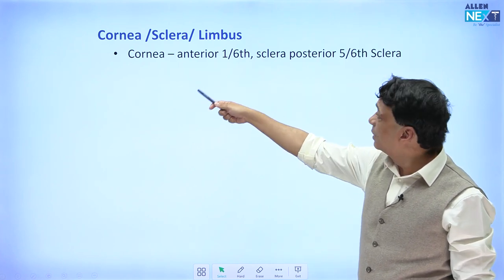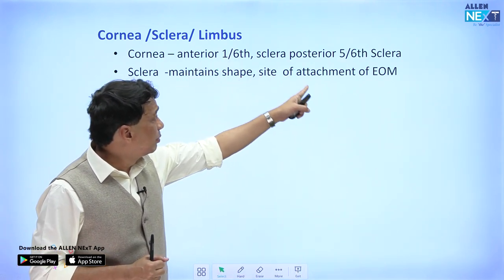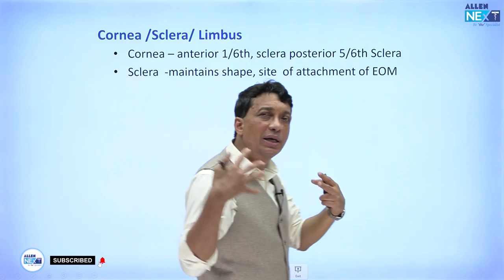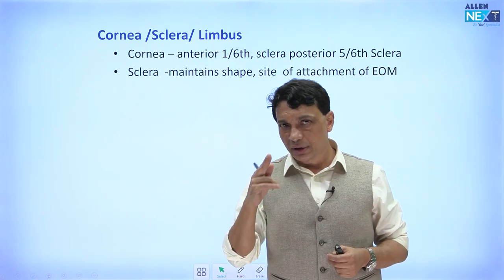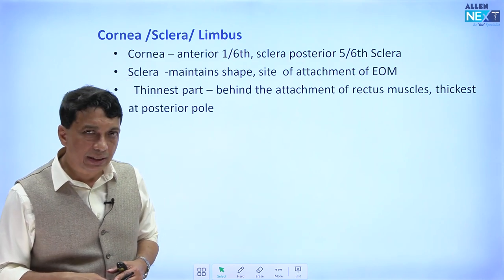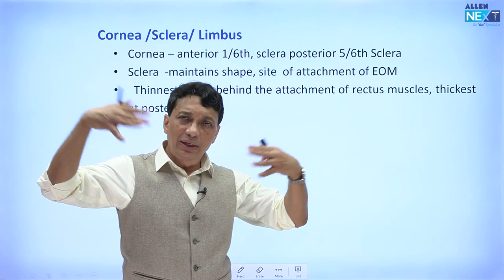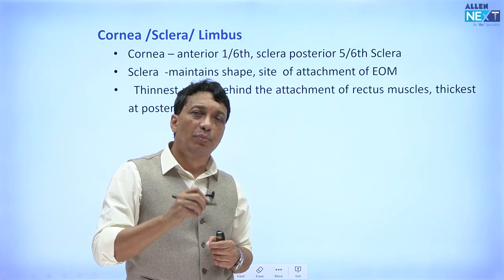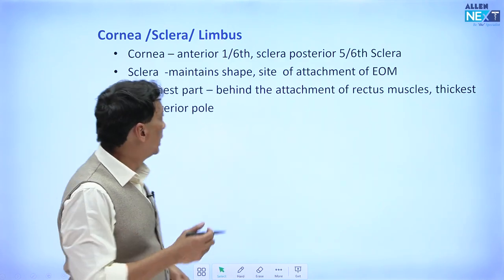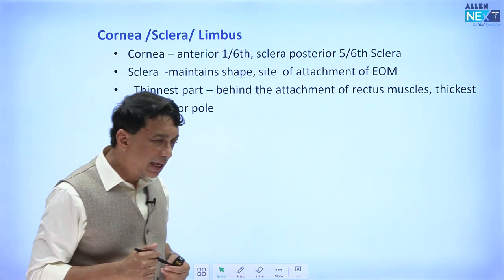The sclera's basic function is protection and maintaining the shape of the eyeball; it also provides the site of attachment for the extraocular muscles. The thinnest part of the sclera — an important MCQ point — is just behind the attachment of the rectus muscles, where it ruptures very easily. The thickest part is at the posterior pole where it joins the optic disc and optic nerve.